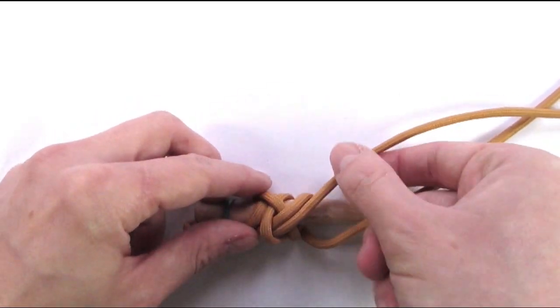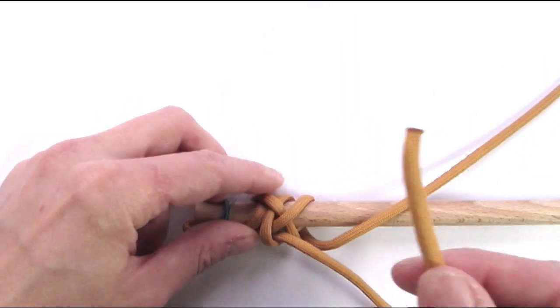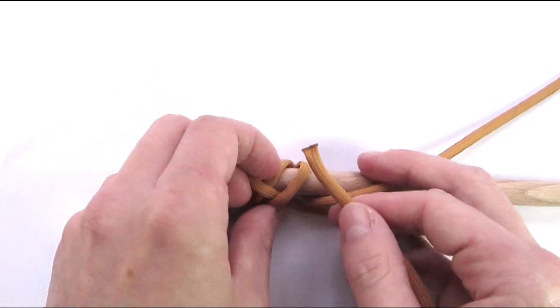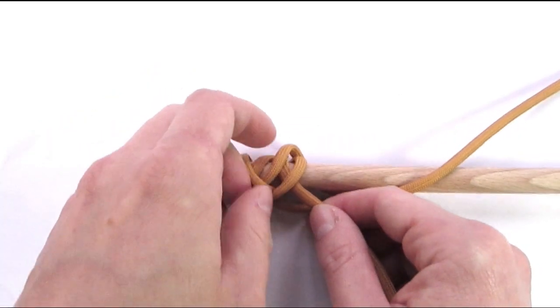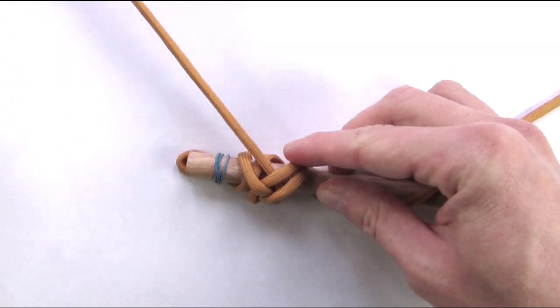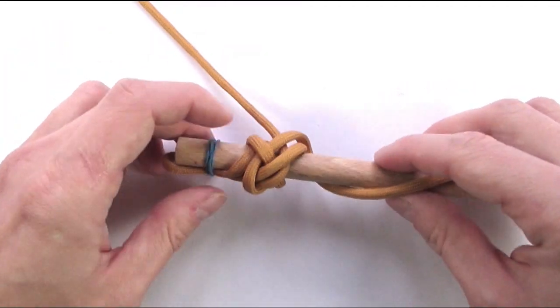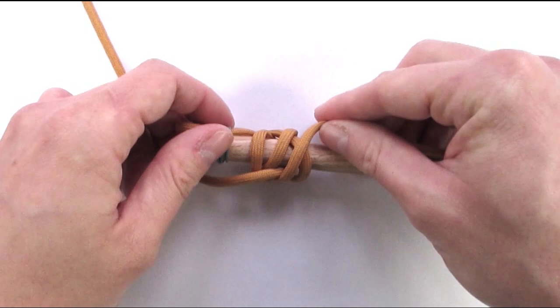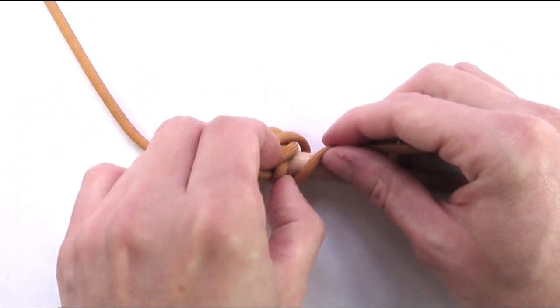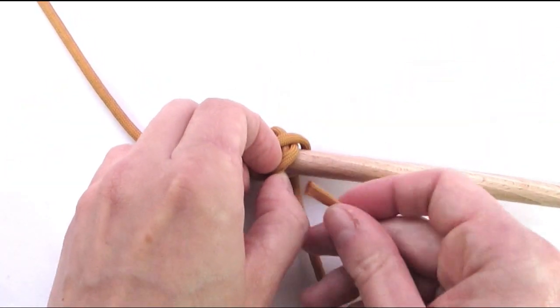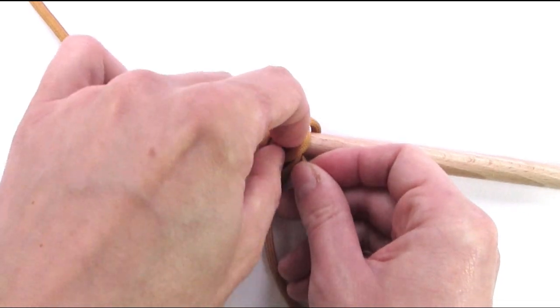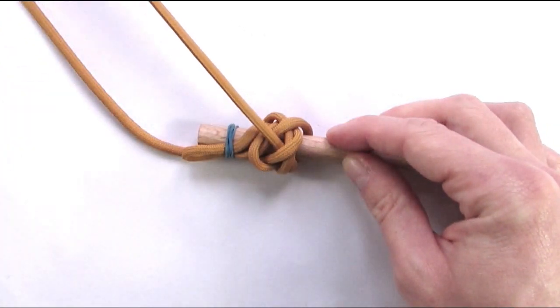We're then going to take one of the ends and travel towards the left, going under two and then over two. With the other end we're again going to start with an under two and then go over two.